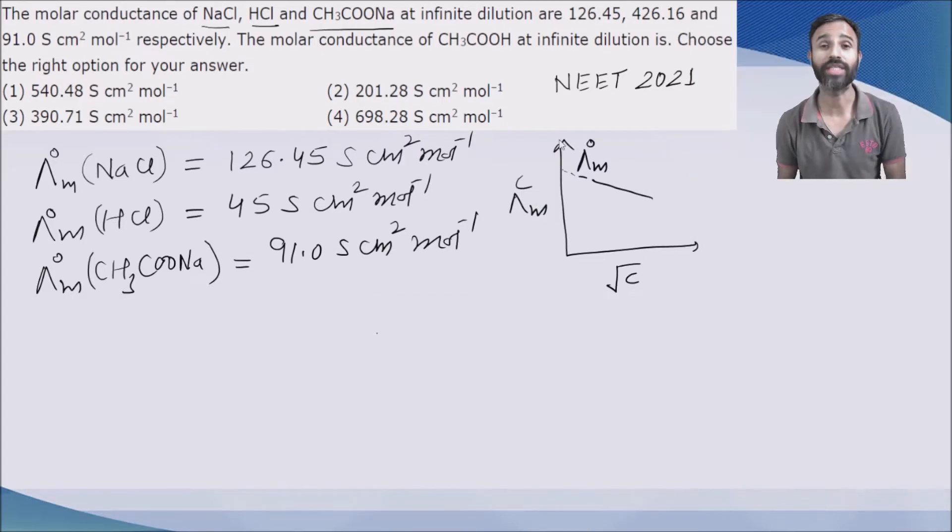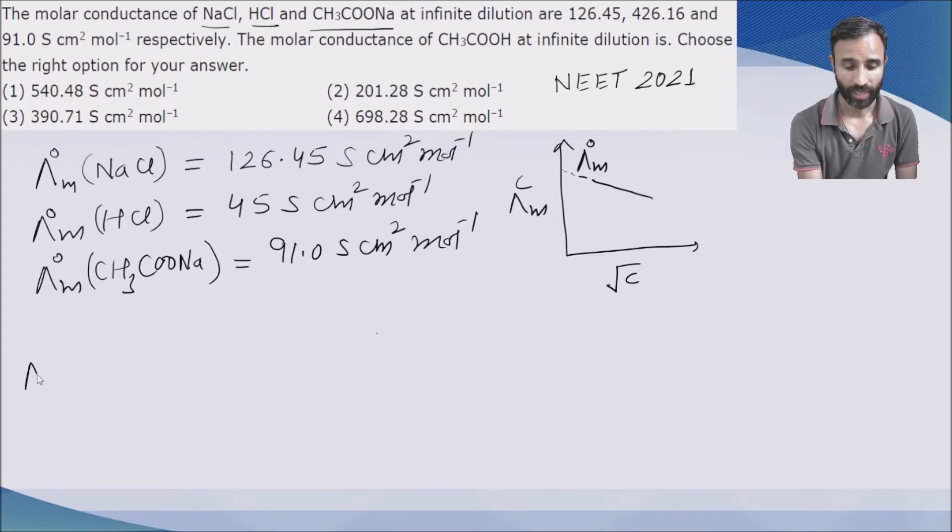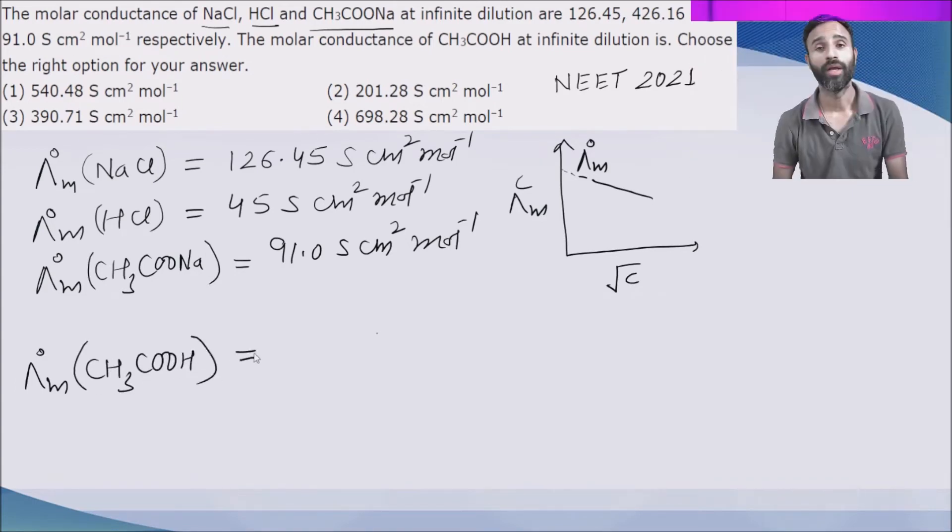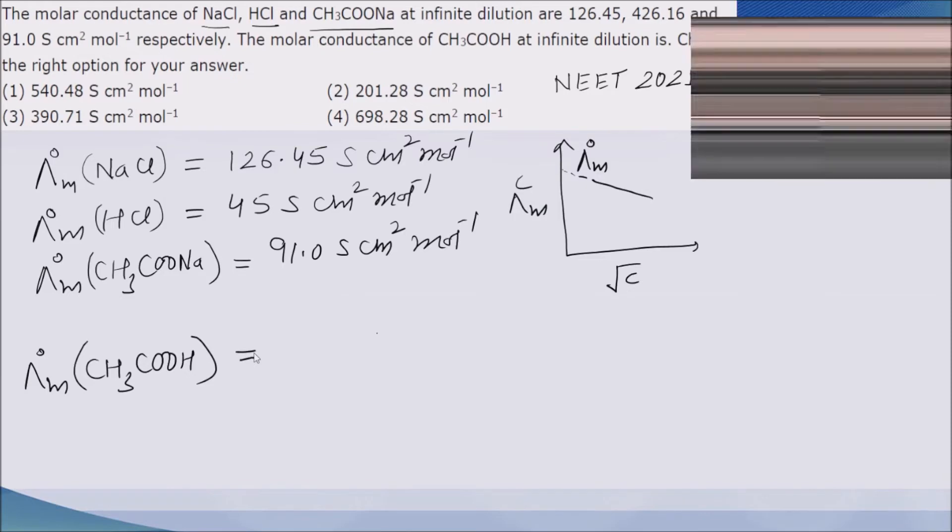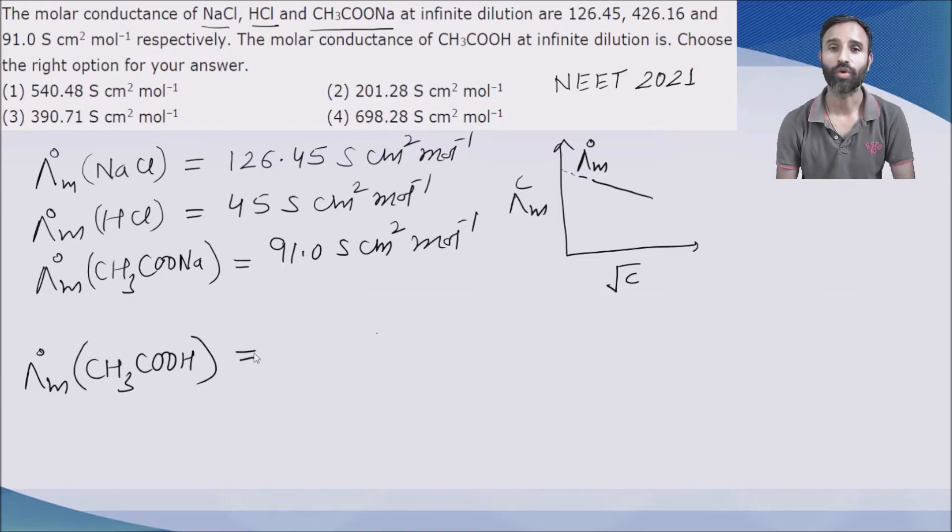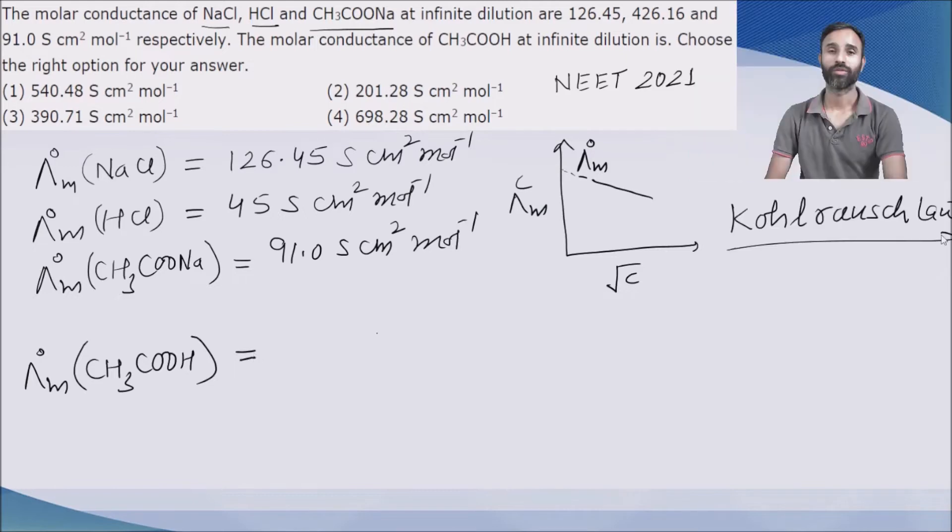But next, by using these molar conductivities, we have to calculate molar conductivity of acetic acid. Acetic acid is a weak electrolyte, a weak acid, whose lambda m0 cannot be calculated using Debye-Hückel equation. So we use Kohlrausch law for it. By using Kohlrausch law, we can calculate lambda m0 of acetic acid.